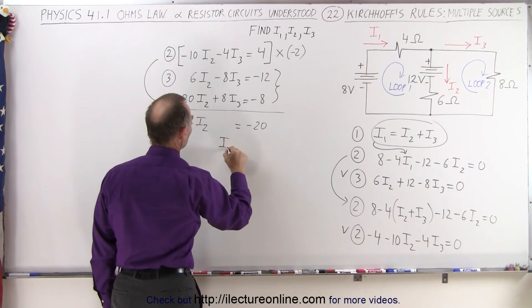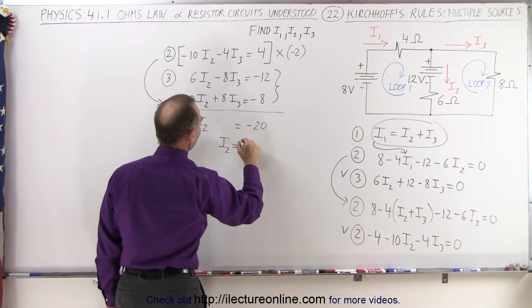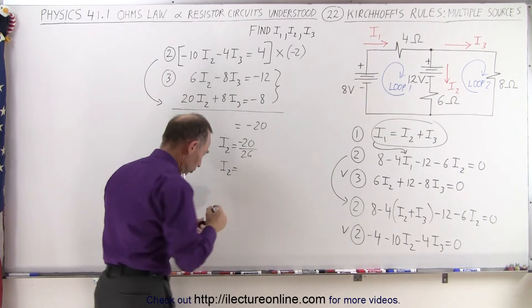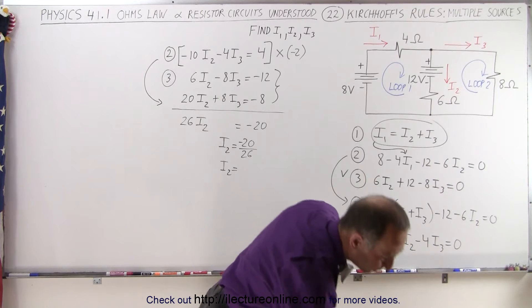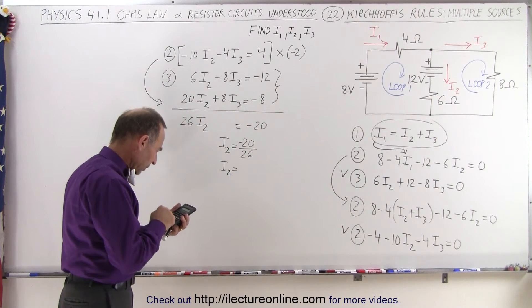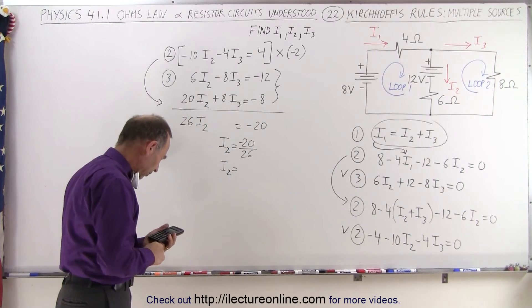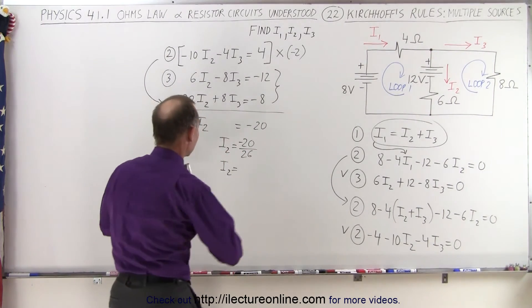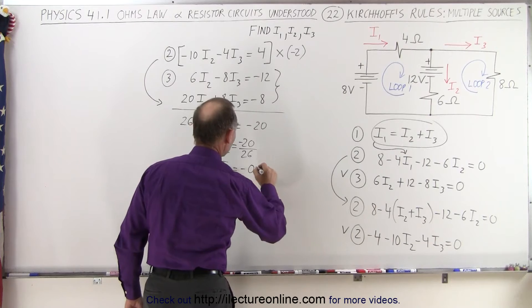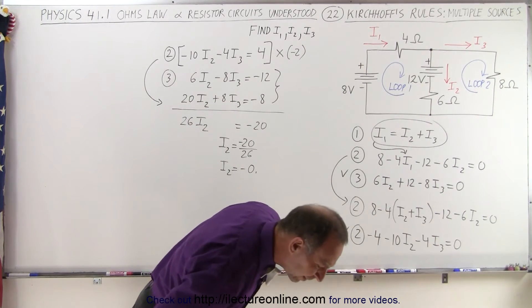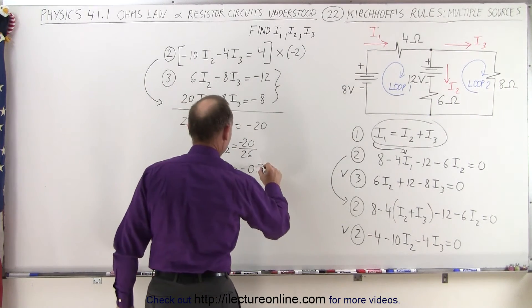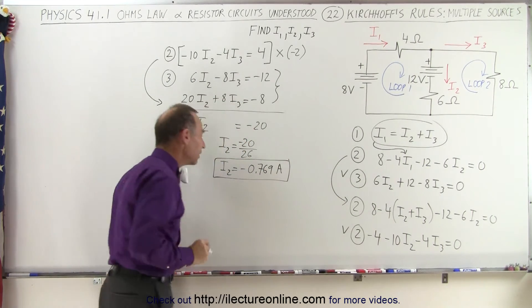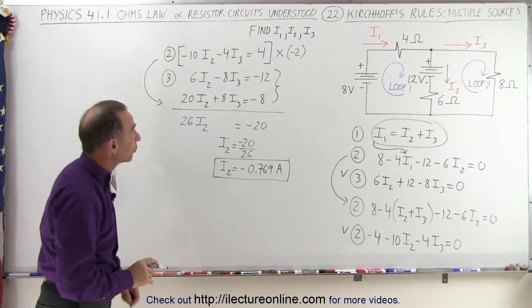And notice then that I2 will be equal to minus 20 divided by 26, or I2 is equal to 20 divided by 26, that gives us 0.769 for three decimal places. So, minus 0.769, and of course, that's in amps. So, there's our first unknown, I2. Now, I need to find the other two.